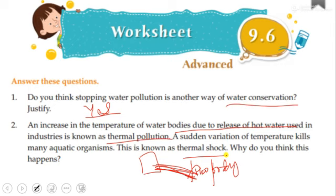This is known as thermal shock. Why does this happen? Because we are not treating water properly before discharging it into rivers. Industries are not cooling the water or treating it — for example, if water is too acidic, it should be neutralized with a mild base, and temperature should be maintained before release. We are not doing that. More points can be added from your own thinking. Thank you.